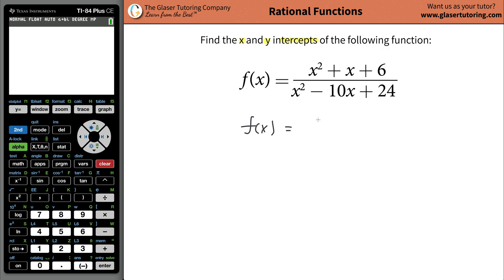So let's factor the top. What two numbers multiply to six but yet add to positive one? Wait a minute. I can't think of any, can you? So what that means is these are going to be imaginary roots.